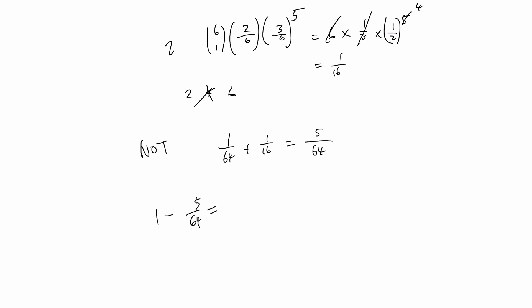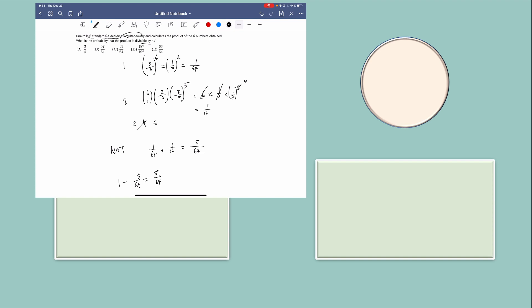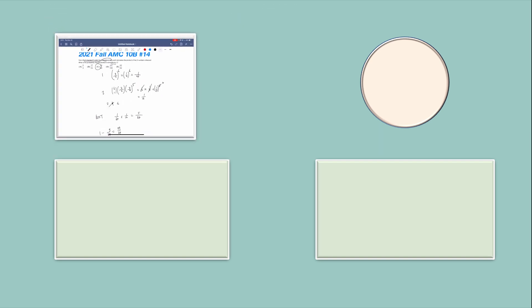So we get, if it is divisible by four, then that will have the probability of 59 over 64, which is our answer choice C. Thank you for watching this episode of Interstigation, and Merry Christmas and Happy New Year if you're watching this before the New Year. And peace out.